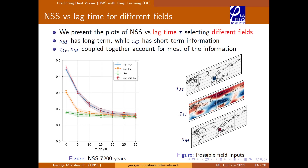The score flattens at longer lead times. Looking at different combinations: geopotential alone performs well, and soil moisture plays a big role for long-term prediction — it doesn't deteriorate much. The global geopotential gives useful information early on. One conclusion is that soil moisture is important for long-lead prediction while global geopotential helps at shorter lead times.